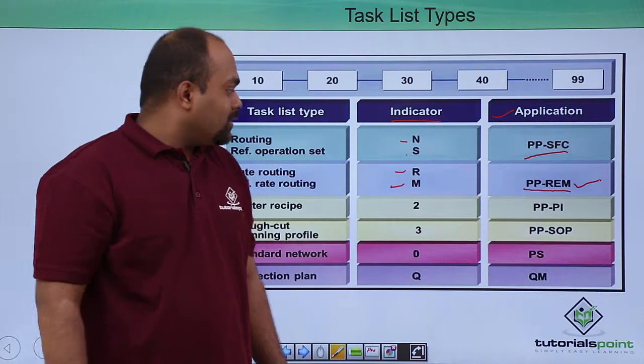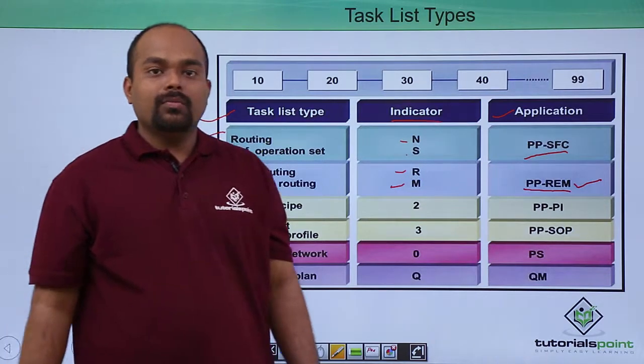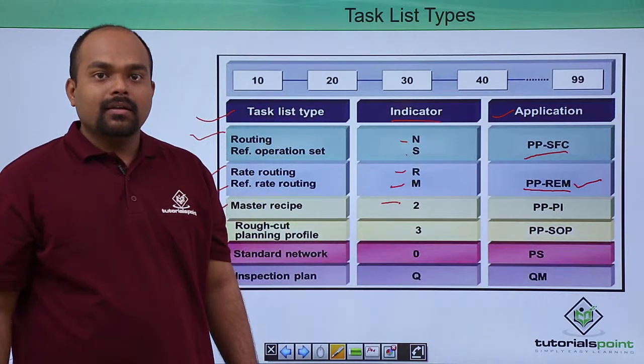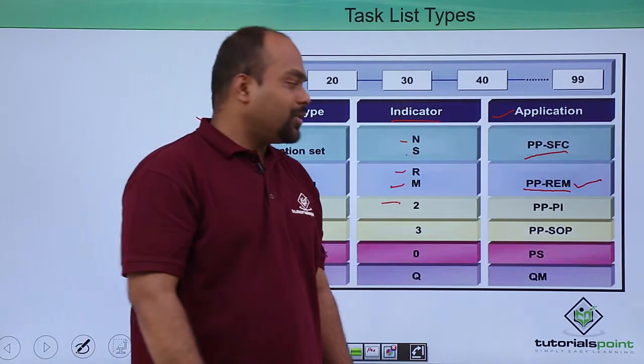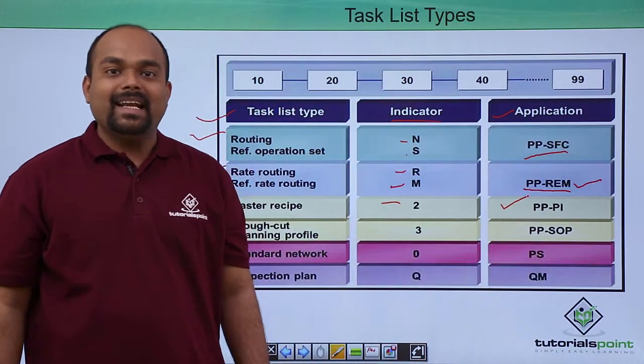Master recipe indication is 2 and it is application in production planning and process industries.